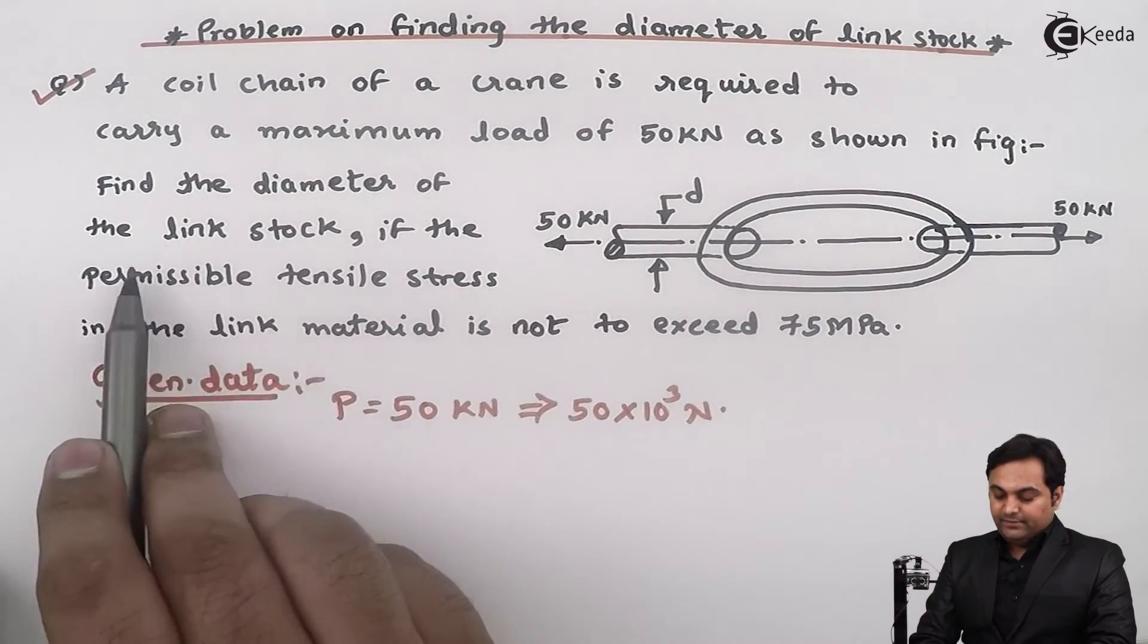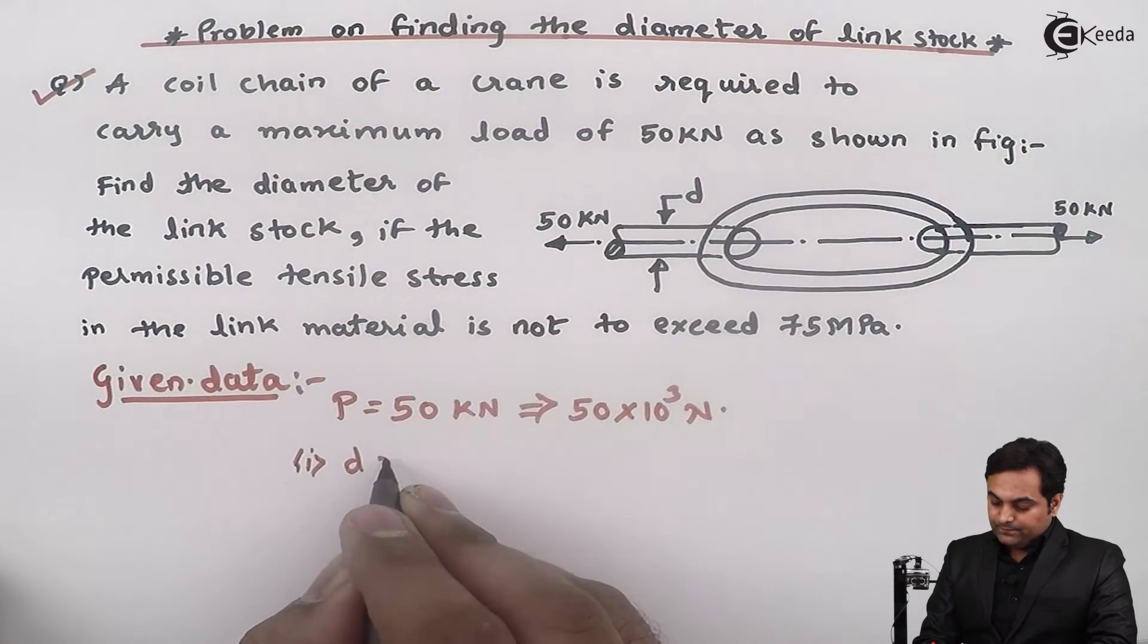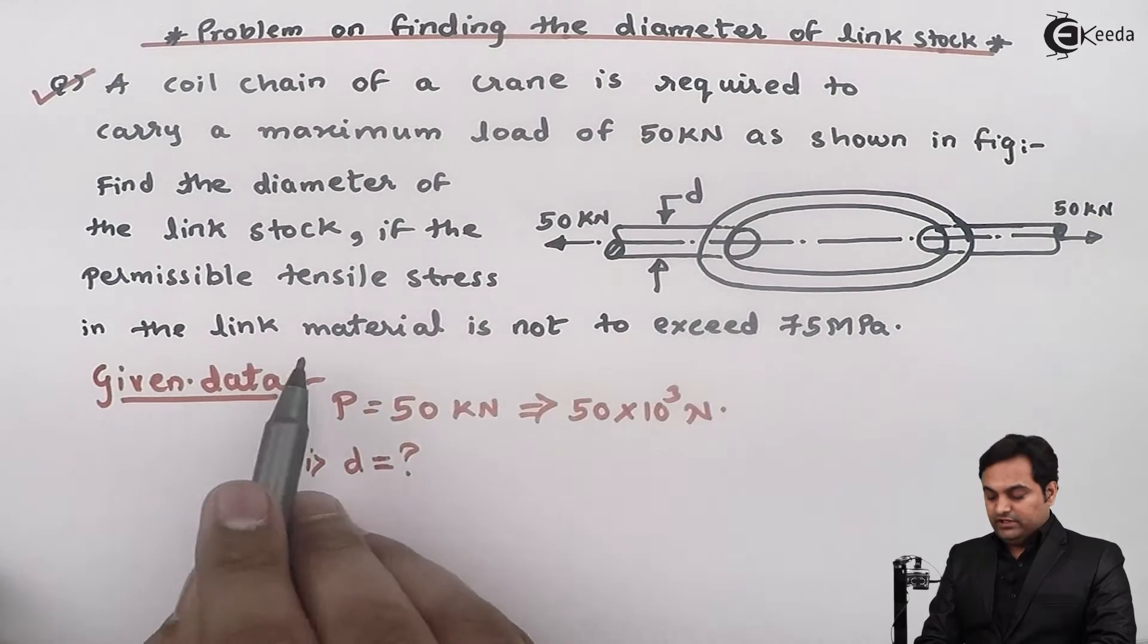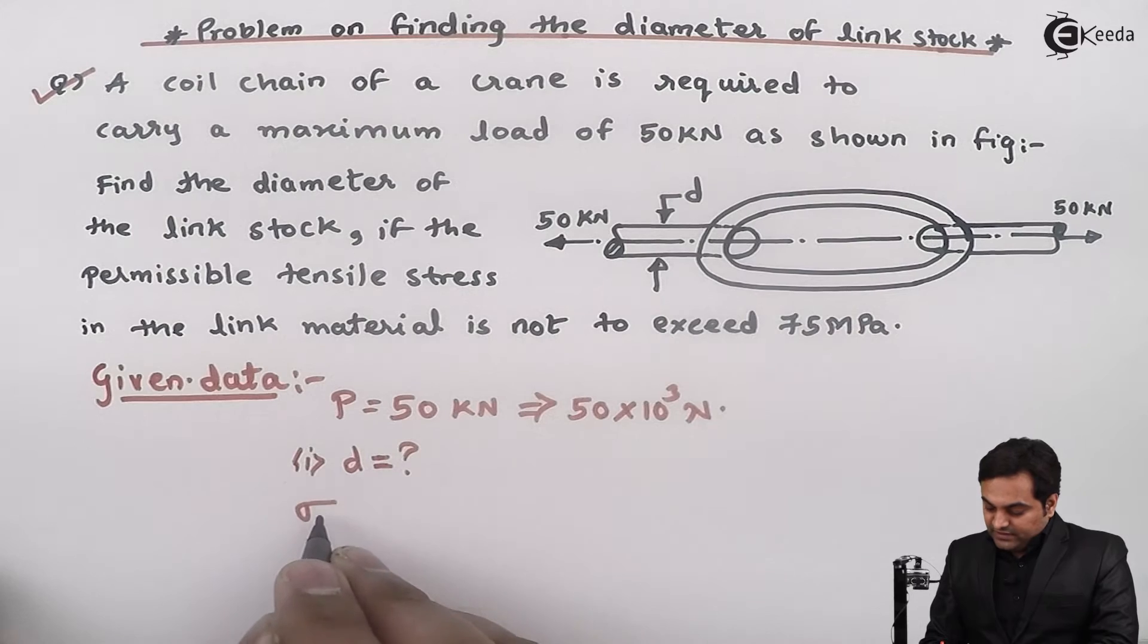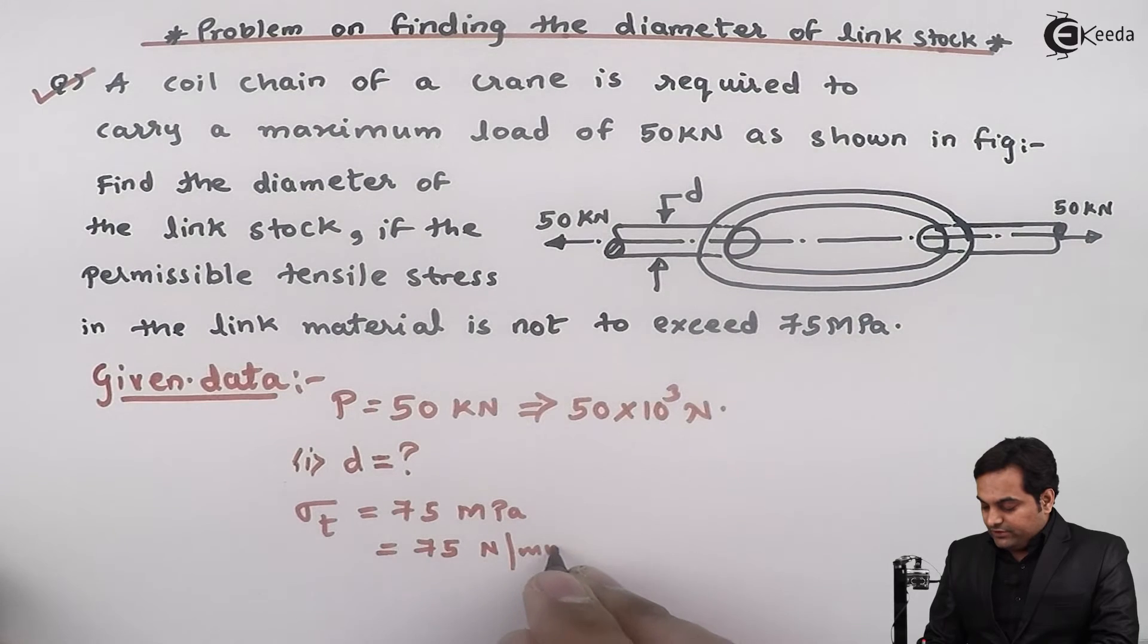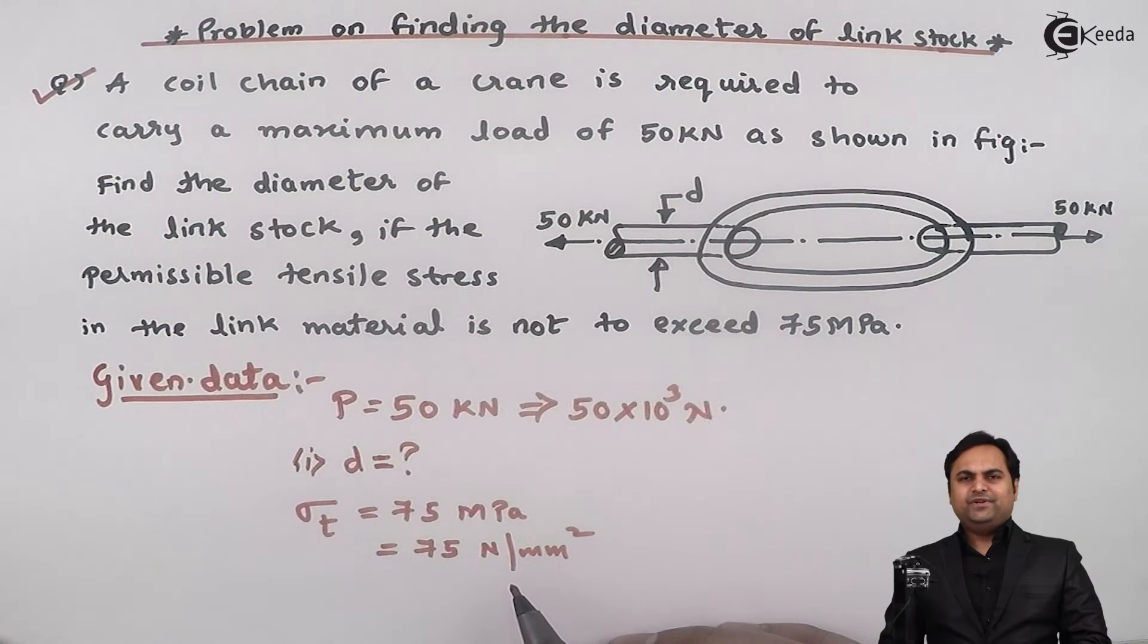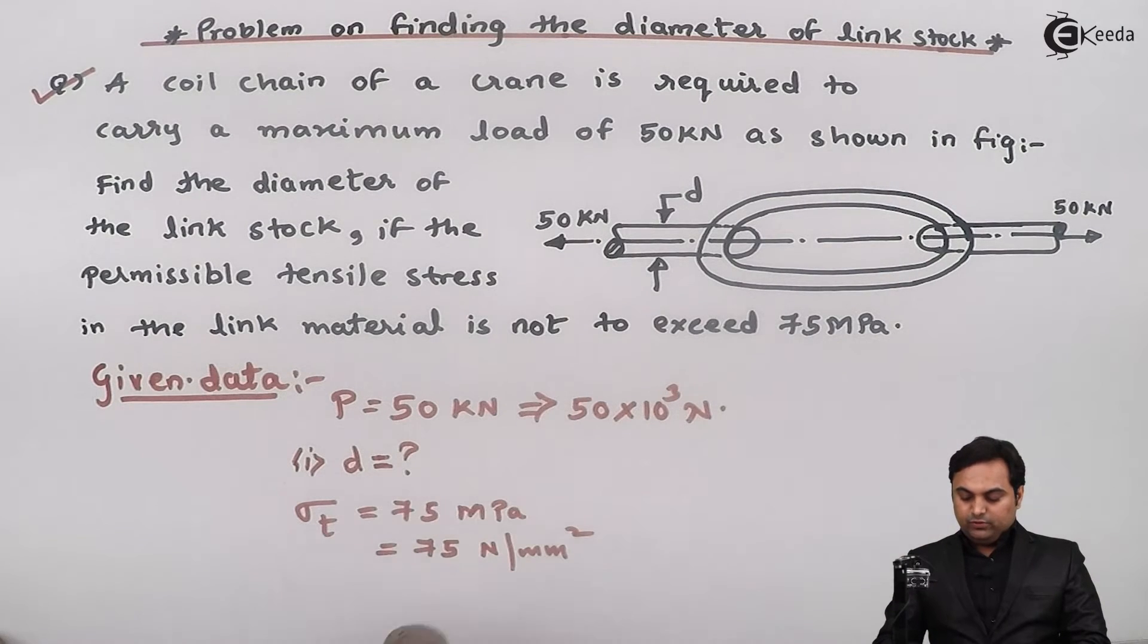Find the diameter of the link stock if the permissible tensile stress in the link material is not to exceed 75 MPa. The permissible tensile stress is σT = 75 MPa = 75 N/mm².